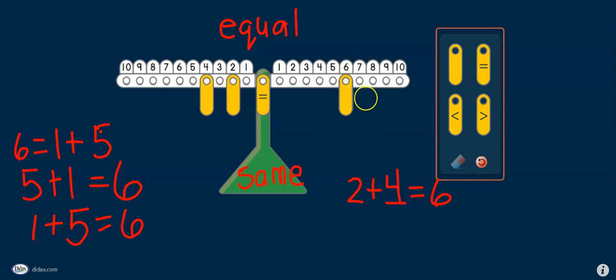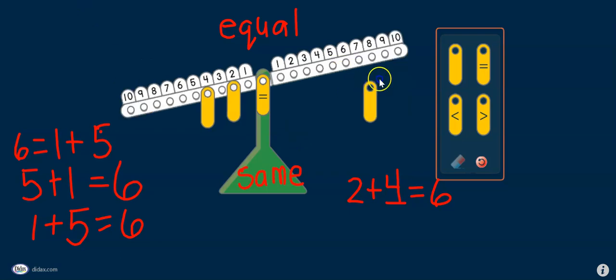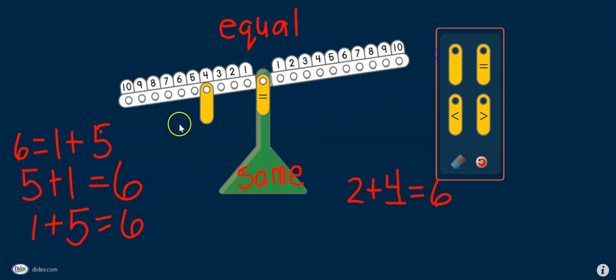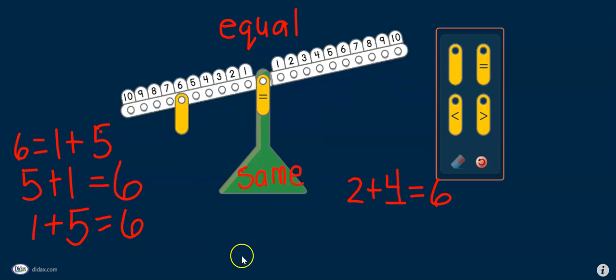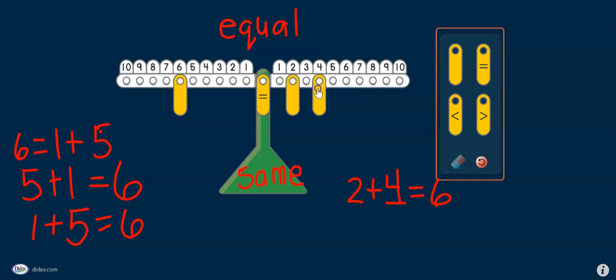2 plus 4 is the same as 6. So, what if I take these off, and I put 6 on this side, and I have 2 and 4 on the other side, is it still the same? Let's write that equation. It is. It is still equal, because I have the same amount on one side as the other. They are both equal.